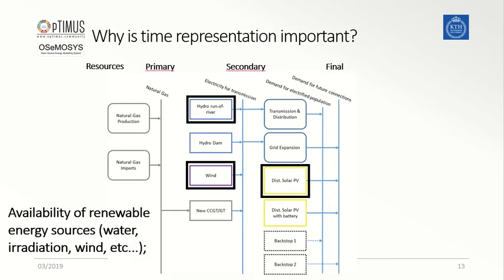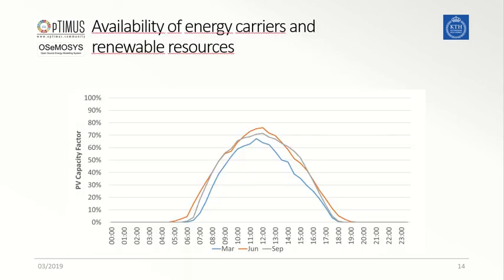Also, other renewable energy sources are typically variable in their supply, depending on when natural resources are available. For instance, in this graph it is shown what can be the typical variability in electricity generation of a photovoltaic system during representative days of different months in a year, showing how the electricity generation is directly linked to the solar irradiation, which is available during daily hours.